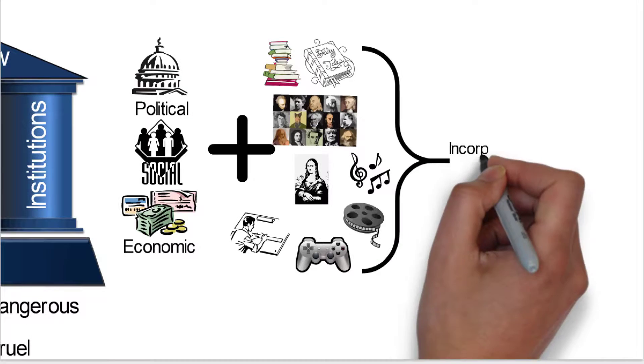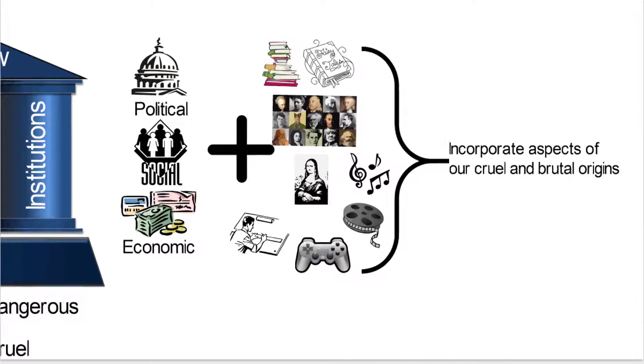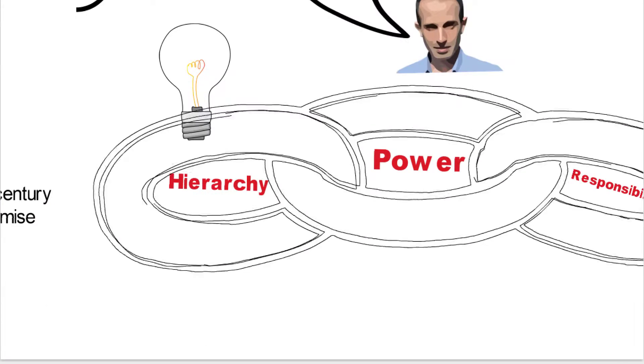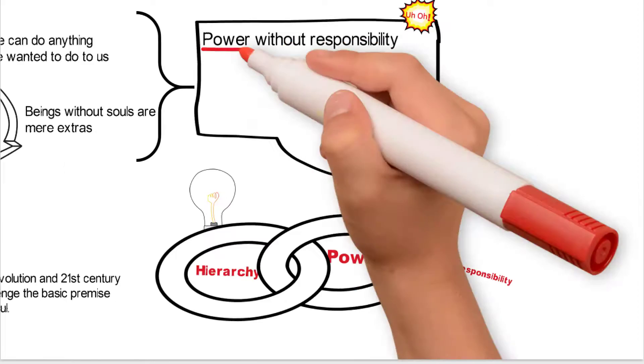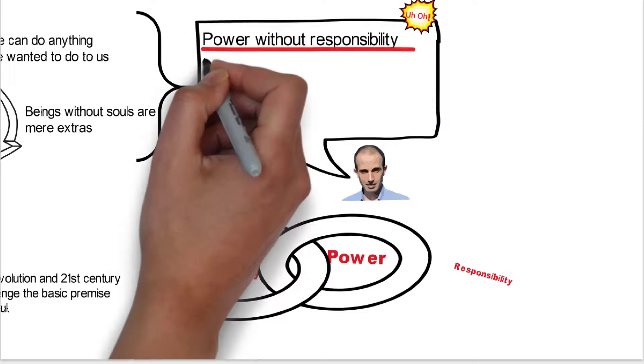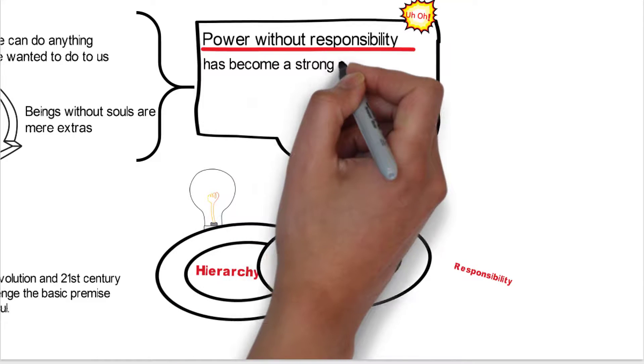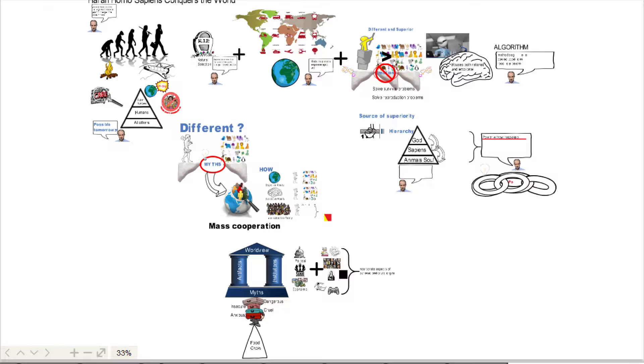So our whole worldview basically incorporates this aspect of our cruel and brutal origins. So we have to be careful, because if we have this tie between hierarchy and power, and we don't have the level of responsibility, so this power without responsibility, it's also become a strong component of our mass cooperation myths. So that puts us in kind of a really quandary, if you will. Anyway, that's where it covers. Thank you.